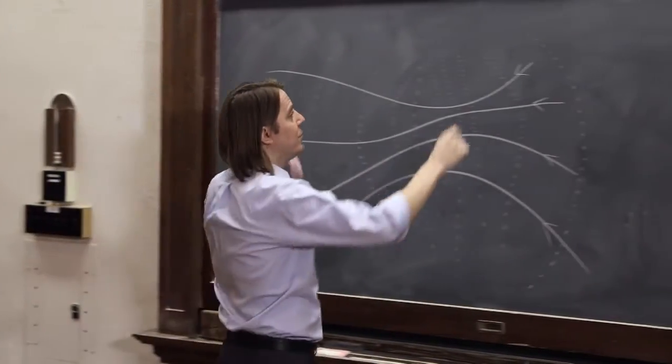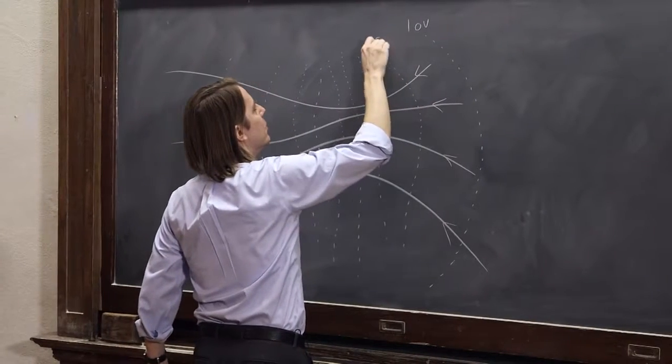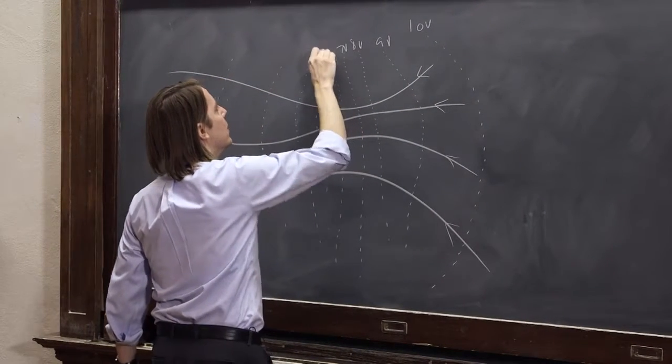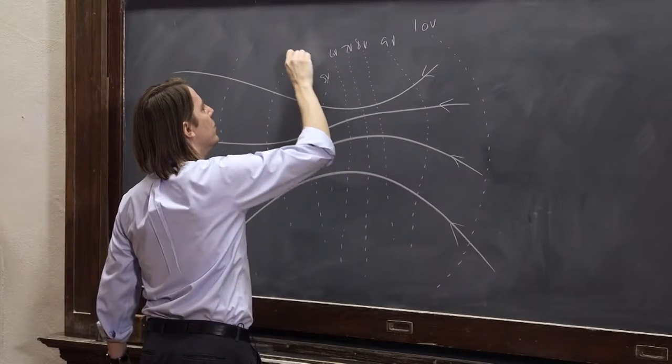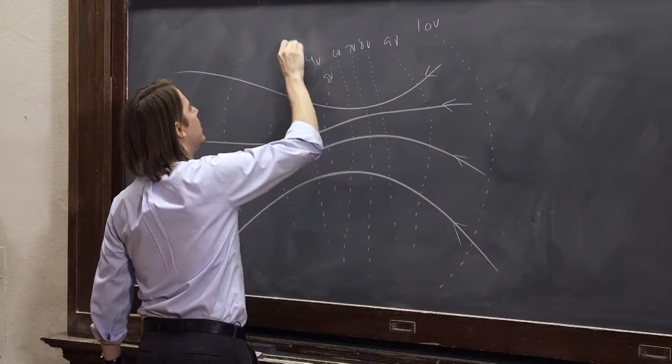So there you go. There's a bunch of equipotential surfaces. You could say, OK, let's make this one 10-volt, 9-volt, 8-volt, 7-volt, 6-volt, 5-volt, 4-volt, 3-volt, 2-volt.